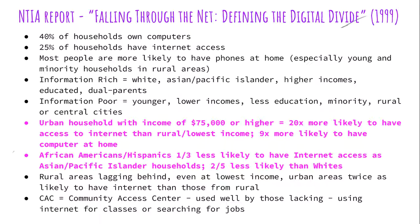One thing worth noting is why the study's first part focuses on household access to phone lines. Thinking back to 1999, most people accessed the internet through dial-up, so hardwired phone connections were necessary. Additionally, African-Americans and Hispanics were a third less likely to have internet access than Asian or Pacific Islander households and two-fifths less likely than whites, which shows the divide not just within ethnicities but across other variables as well.